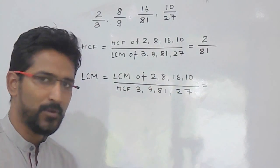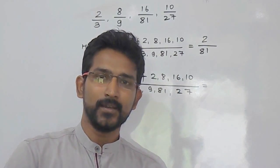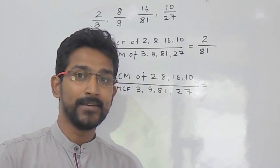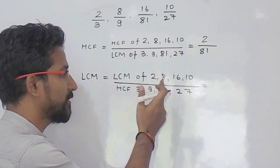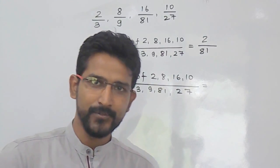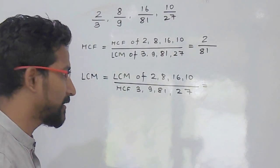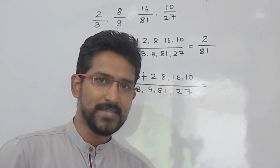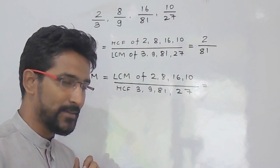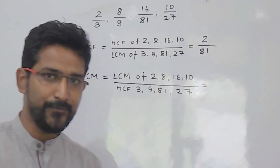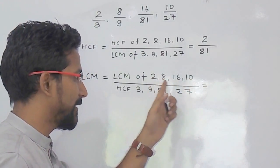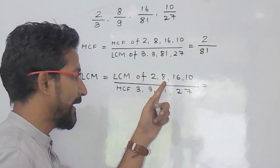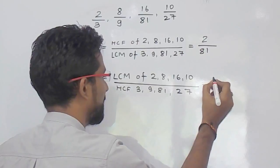We take the LCM of the numerators. The greatest number among them is 16. We check whether the remaining numbers are divisors of 16: 2 and 8 are divisors of 16, but 10 is not. So we multiply: 16×2=32, not divisible by 10. 16×3=48, not divisible by 10. 16×4=64, not divisible by 10. 16×5=80. Now 80 is divisible by 2, 8, and 10. So the LCM of the numerators is 80.